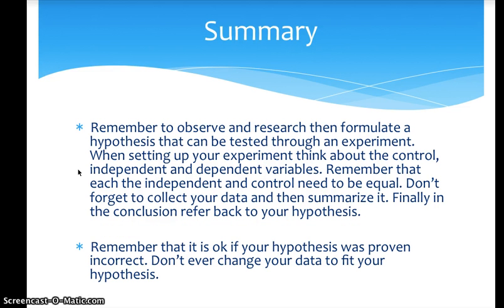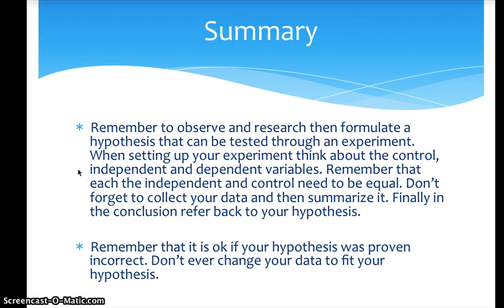Alright, your summary: remember to observe and research, then formulate a hypothesis that can be tested through an experiment. When setting up your experiment, think about the control, independent variable, and dependent variable. The independent variable is what you change, the dependent variable is what you measure, and the control is the norm — and the independent variable and control need to be equal. Collect your data, summarize it, and in the conclusion refer back to your hypothesis. It is okay if your hypothesis was proven incorrect — never change your data to fit your hypothesis.